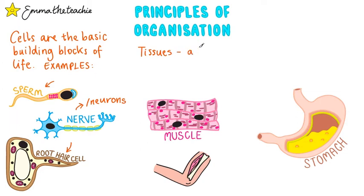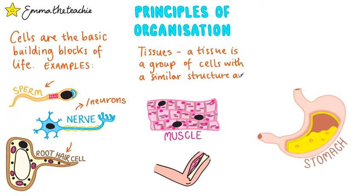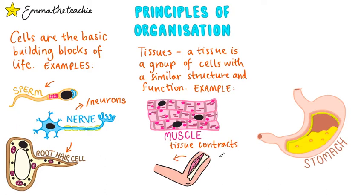Next up are tissues. A tissue is a group of cells with a similar structure and function. For example, here we've got muscular tissue, and its function is to contract, causing movement. You can see that all of the cells have a similar structure.